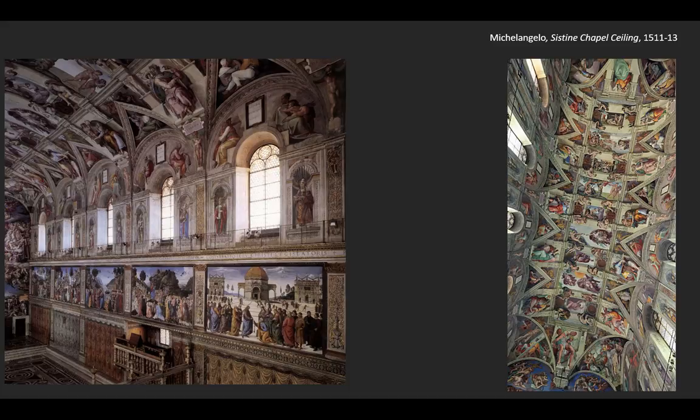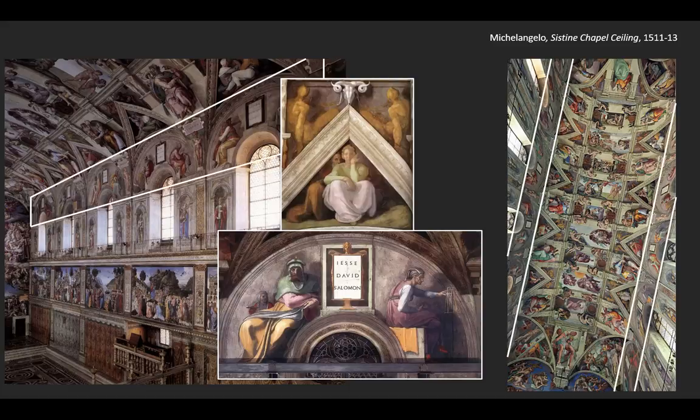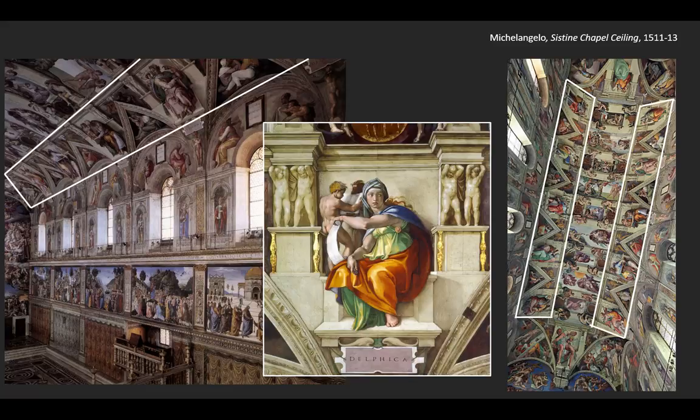In the lower walls, over the windows, are the ancestors of Christ. We can trace his lineage moving up into the triangular sections above as well — we see the ancestors of Christ. Above them, we see prophets who foretold the coming of Christ, so Christ is alluded to as we work our way up the ceiling.